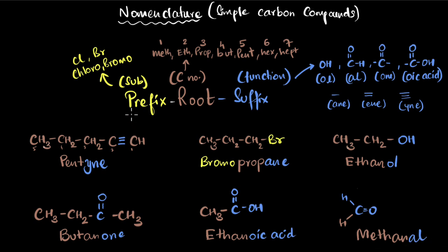To sum it up: start with the prefix, then count the number of carbons to find the root word, then determine the suffix. If you have no functional groups, the suffix is 'ane,' 'ene,' or 'yne' depending on bond type. If you do have a functional group, write the root with 'ane,' delete the final 'e,' then add the suffix: 'al,' 'ol,' 'one,' or 'oic acid.'